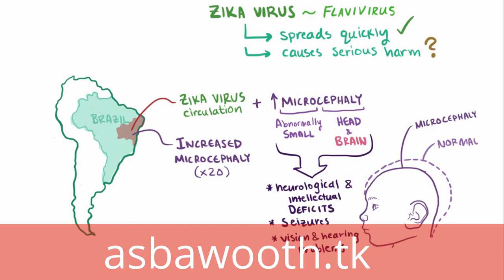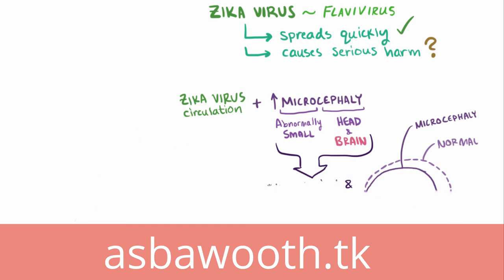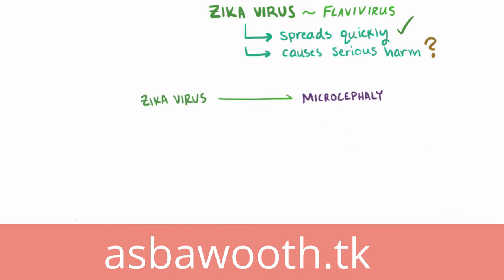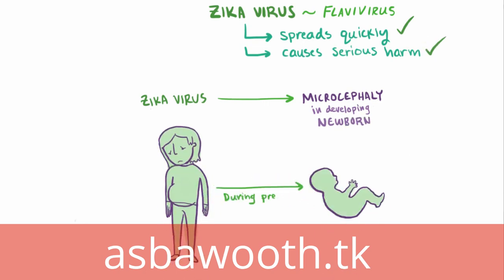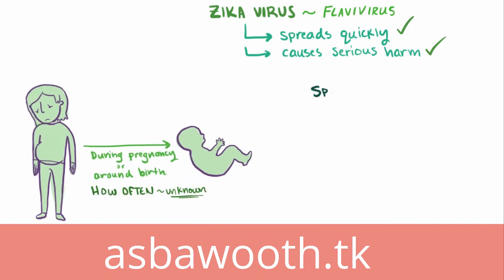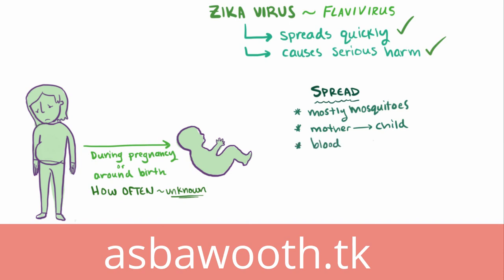As of November 2015, the European Center for Disease Control stated that it's plausible that the Zika virus is able to cause microcephaly in the developing fetus or newborn, as the Zika virus can be transmitted from mother to baby during pregnancy or around the time of birth, although it's not really known yet how often this happens or how exactly the Zika virus is linked to microcephaly. In addition to being spread mostly by mosquito bites and in some cases from mother to child, Zika virus has also been reported to spread through blood transfusions and sexual contact.